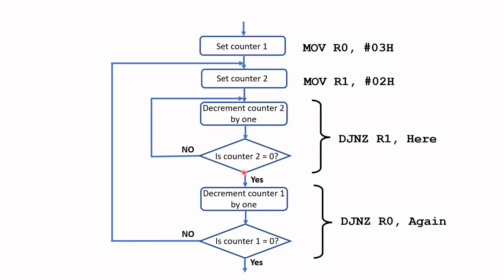Once the inner loop finishes, we decrement counter one (R0). If R0 is not zero, we go back and reset R1 with 0x02 and repeat the inner loop again. This continues, decrementing counter one each time the inner loop completes, until counter one is also zero. At that point it exits the loop — this corresponds to the RET instruction.